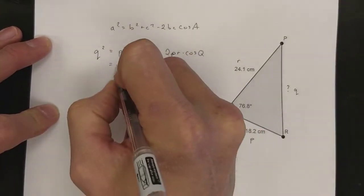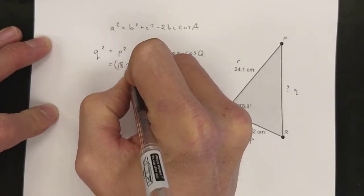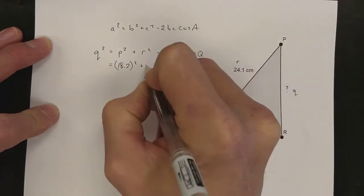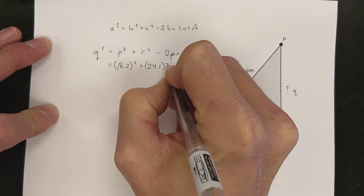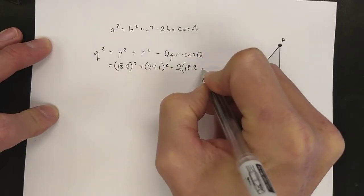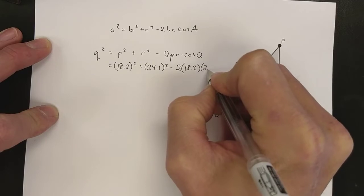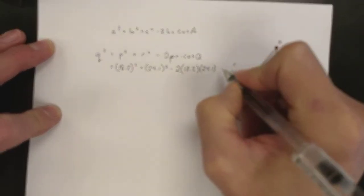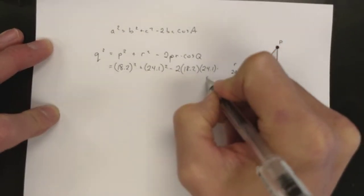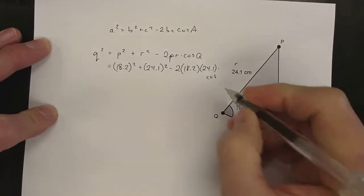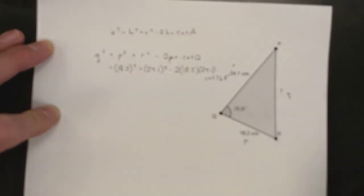So p is 18.2 squared, r is 24.1, we're going to square that as well, times 2 times the 18.2 times the 24.1, and then I ran out of room, but times cos of 76.8 degrees.